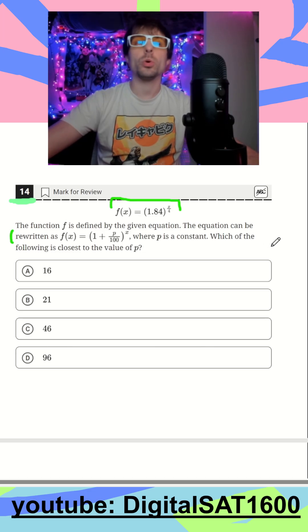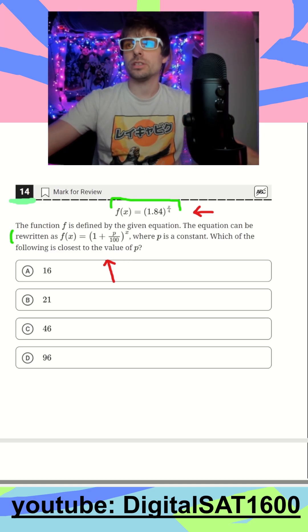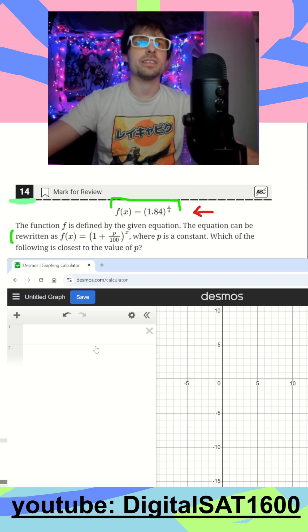So a big point is going to be recognizing when we can do a really easy Desmos problem. I already can see if I type this into Desmos and I use a slider for p, I can make our graphs look similar. So let's pull up Desmos real quick and type these in.